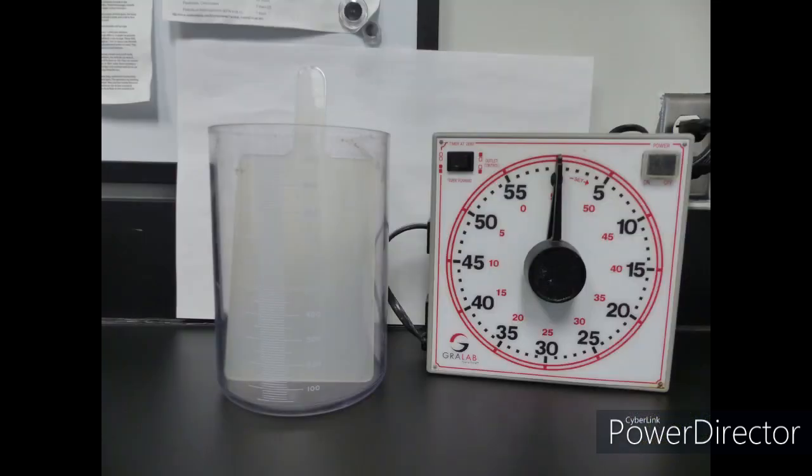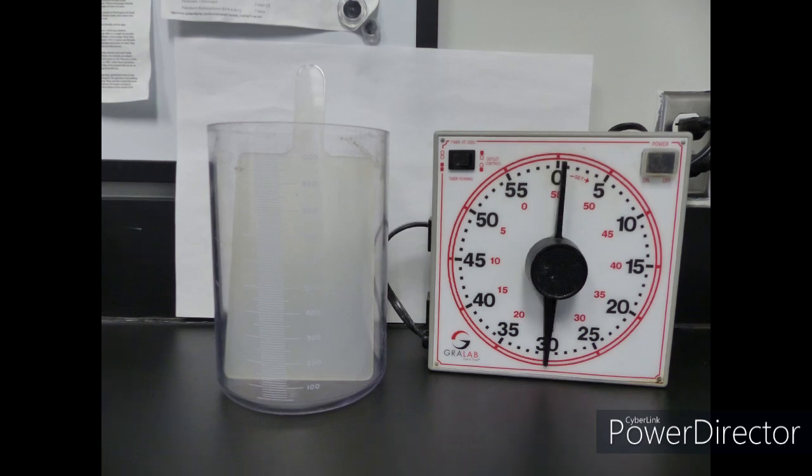Now we are ready to perform the test. For this test, we will be allowing 30 minutes of settling time and noting the sludge level at both 5 and 30 minutes. It is important not to shake or violently mix the sludge prior to the test. Doing so will break up the sludge flock and give false data.